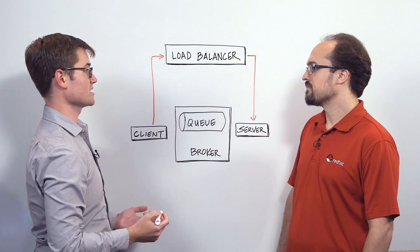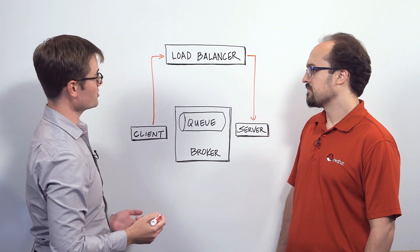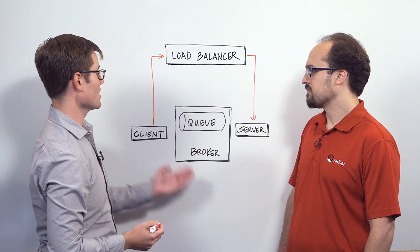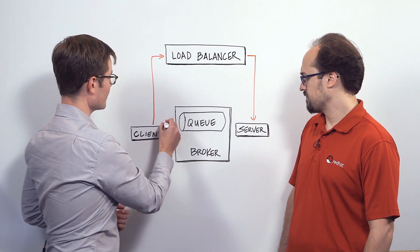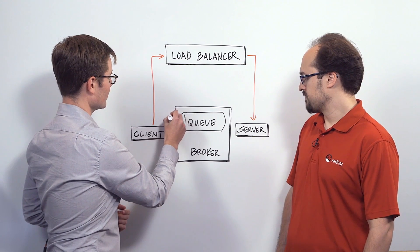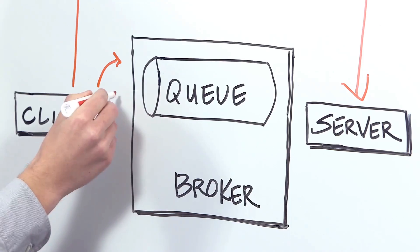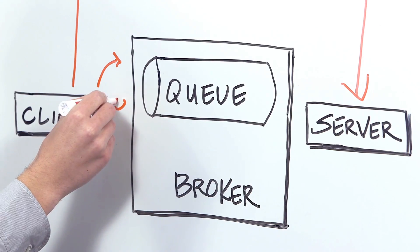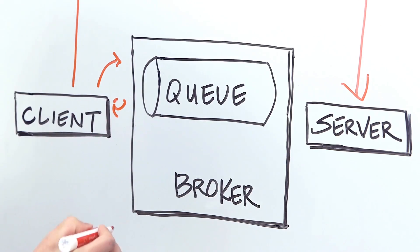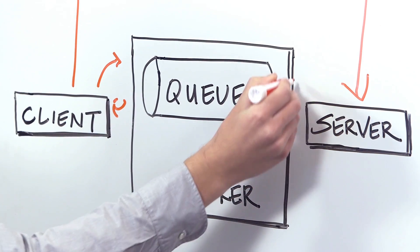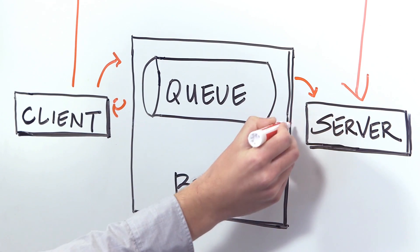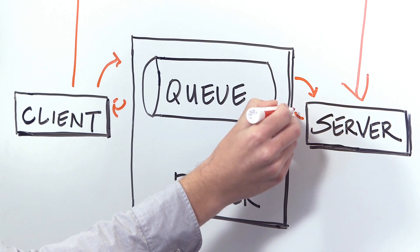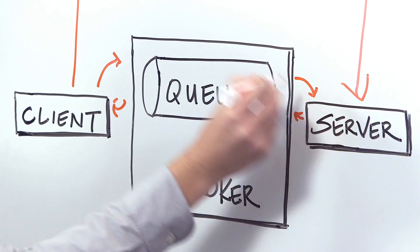In the asynchronous case, you're usually using a message broker. Your client will enqueue a message and receive an acknowledgement from that queue. The server will then receive that message from the queue and process it.